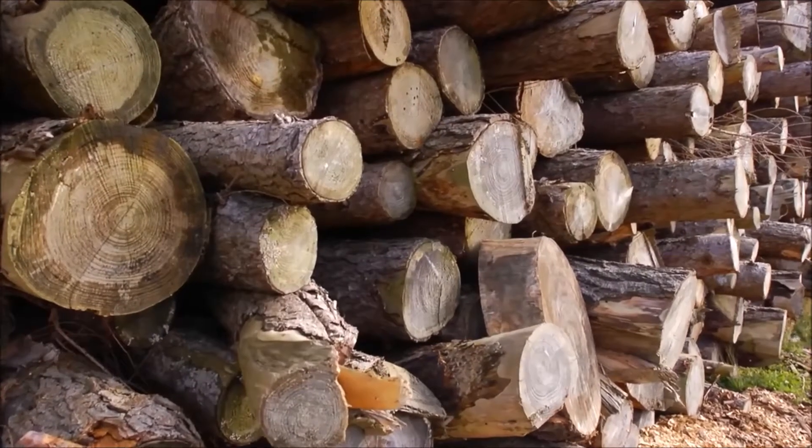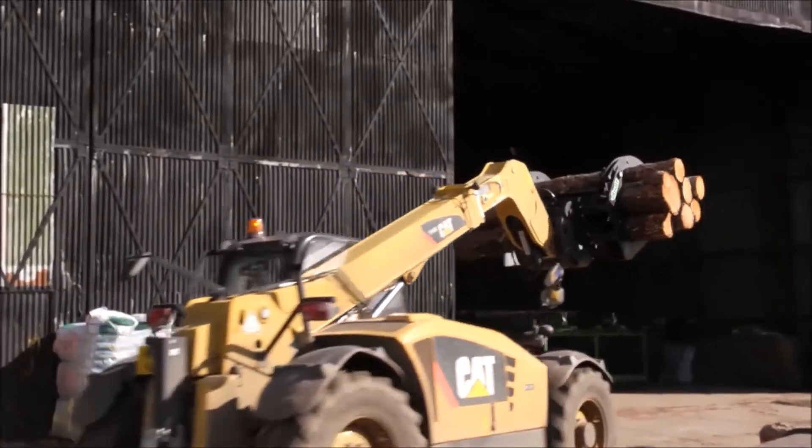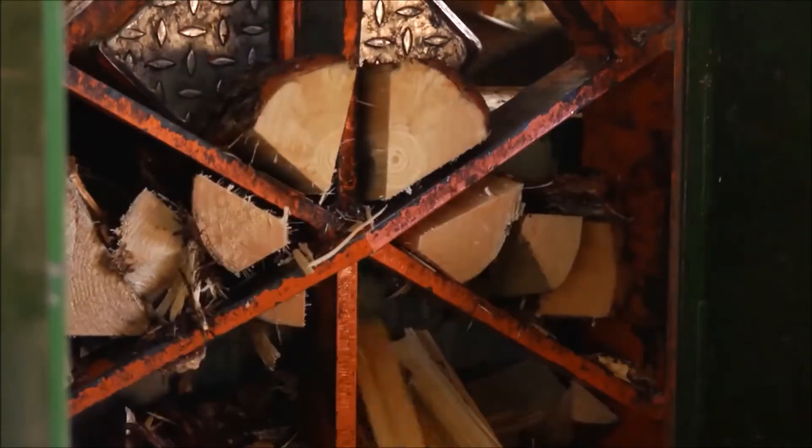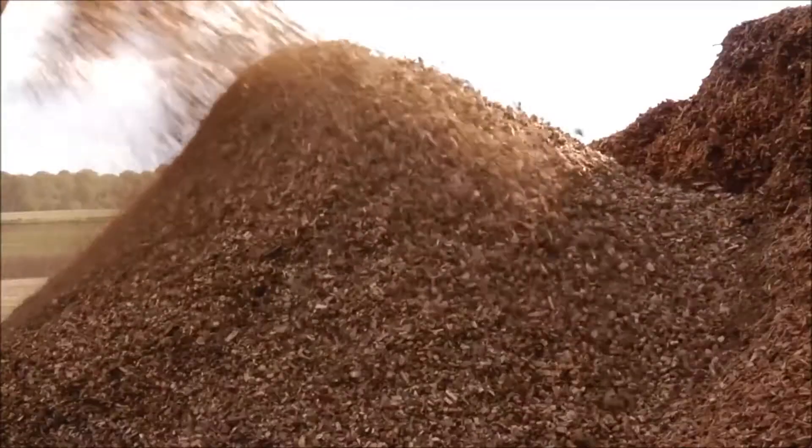Wood is the most common type of biomass fuel, and three main types are used in biomass boilers: logs, wood pellets, and wood chip.